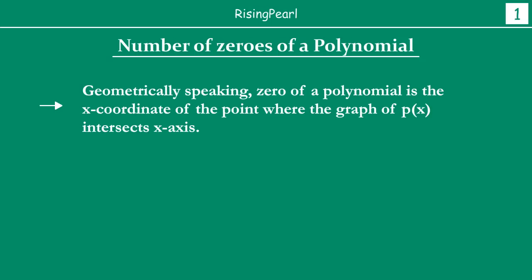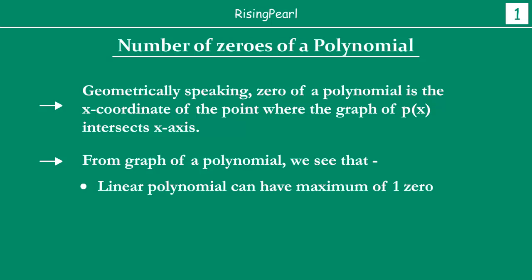Geometrically speaking, the zero of a polynomial is the x-coordinate of the point where the graph of the polynomial p(x) cuts or intersects the x-axis. We have seen this over and over again in the last 6 webisodes. From the graph of any polynomial, a linear polynomial can have a maximum of one zero. There can be cases where there are no zeros, but at most it can have one zero.